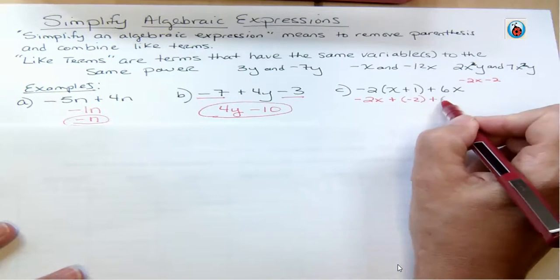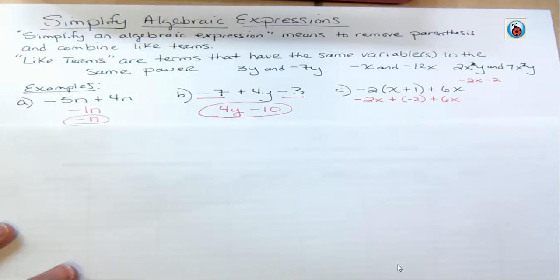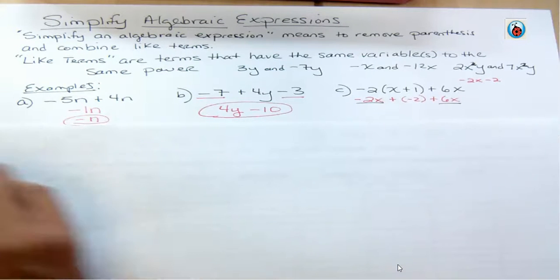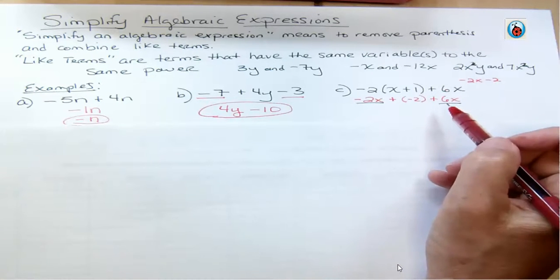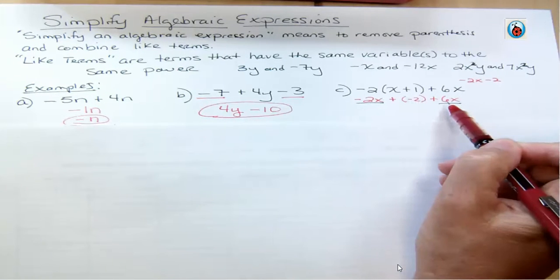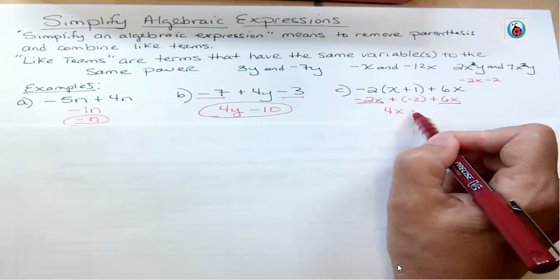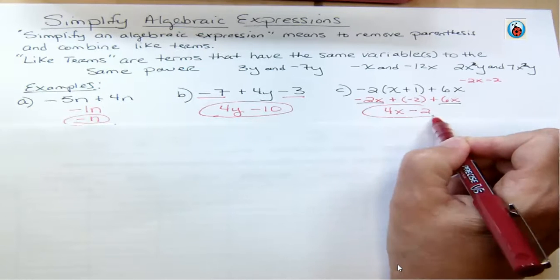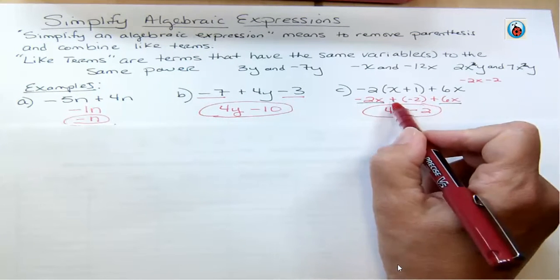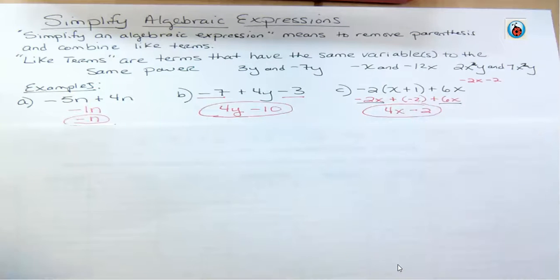Now I also have +6x, which had nothing to do with the parentheses. After removing the parentheses, I combine like terms. The like terms are the x-terms: −2x and +6x. I have two negatives and six positives — more positives by four — so I get 4x. And I still have −2. Remember, subtracting 2 is the same as adding −2, so either form is fine.